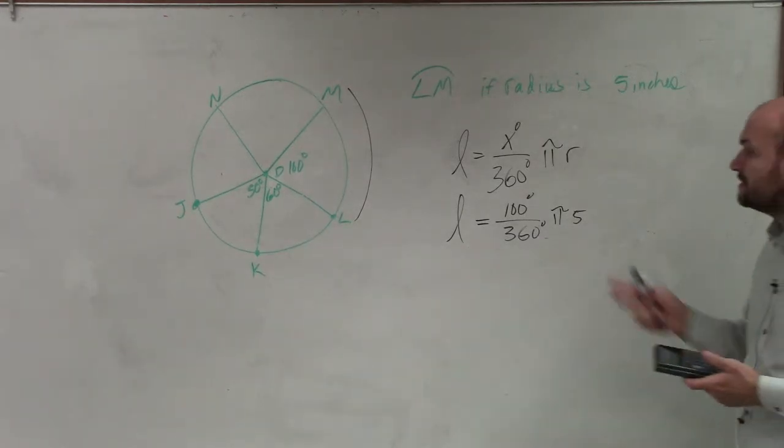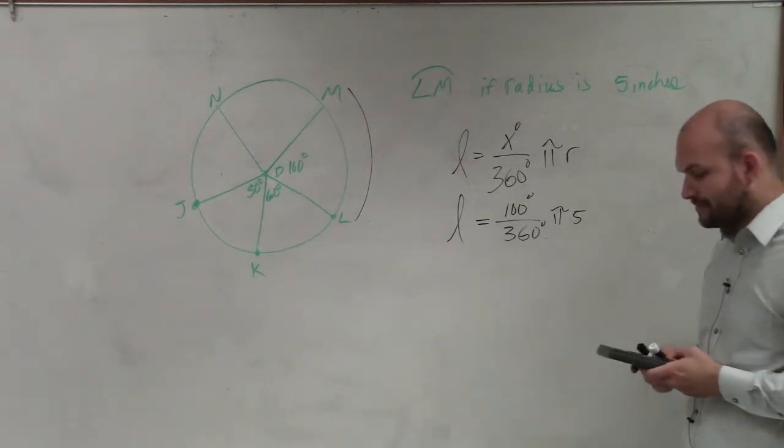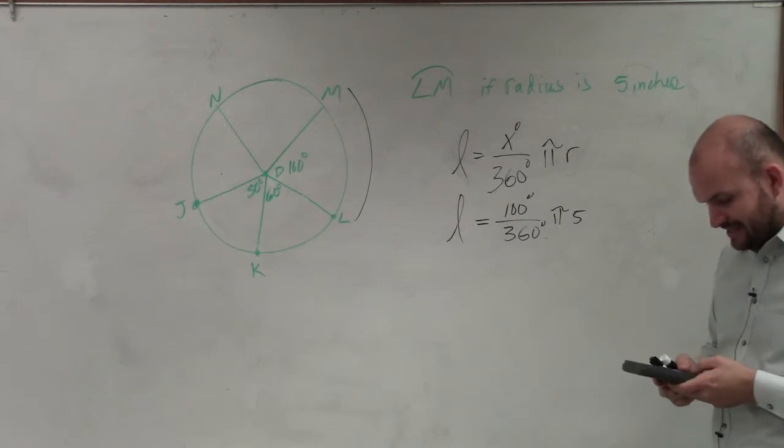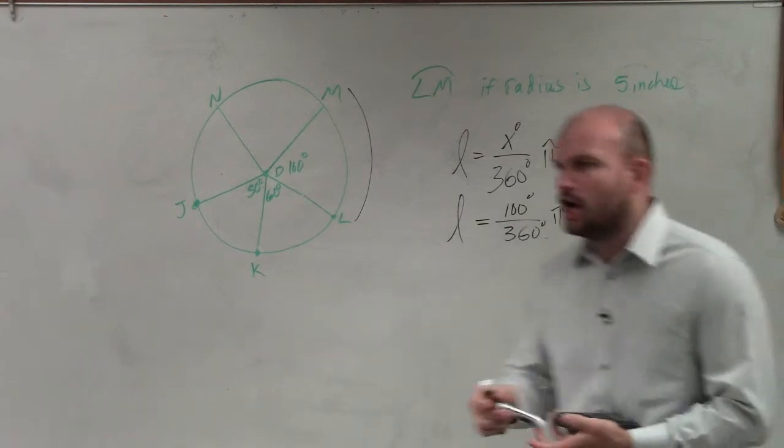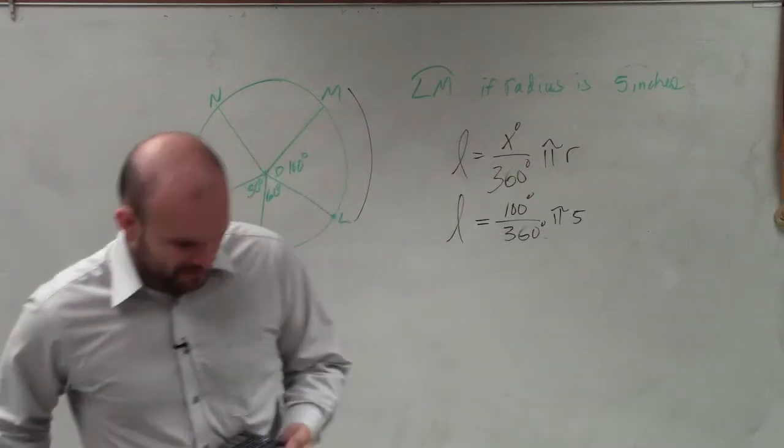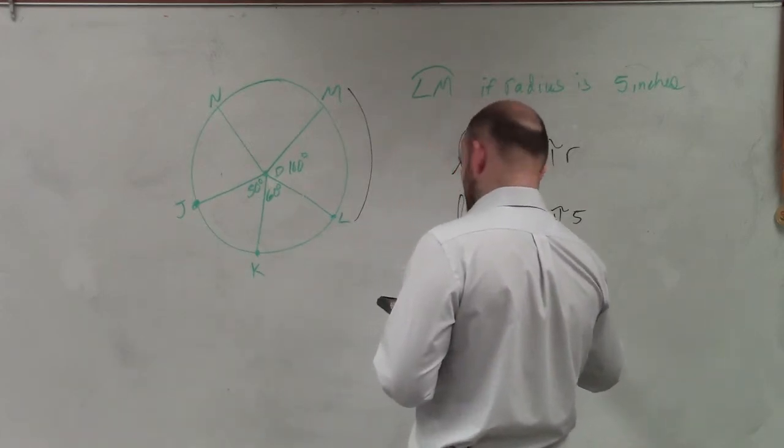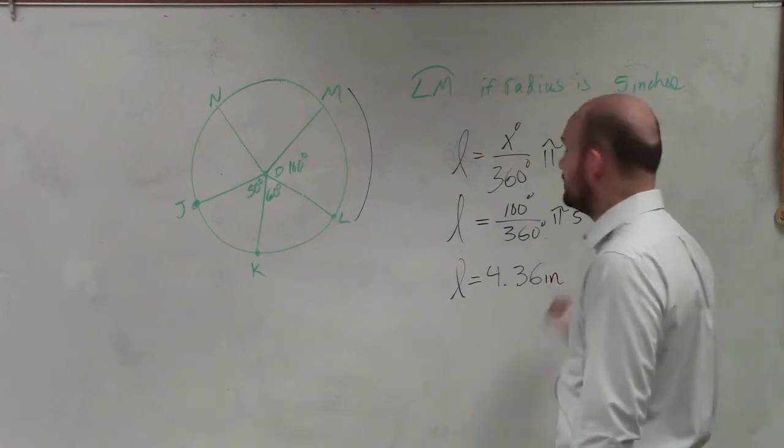Now, I simply just need to go ahead and plug this into my calculator. So I have 100 divided by 360, which is going to be 5 over 18, times pi times 5. And when I round to the 100th, I believe they're asking us to do, is going to be length equals 4.36. And since we're talking about inches, it's going to be in inches.